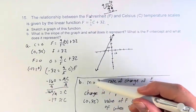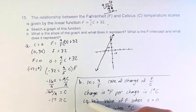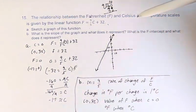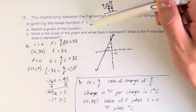So this is the graph, this is the slope and what it represents, and this is the F-intercept and what it represents for the relationship between Fahrenheit and Celsius: F equals 9/5 C plus 32.